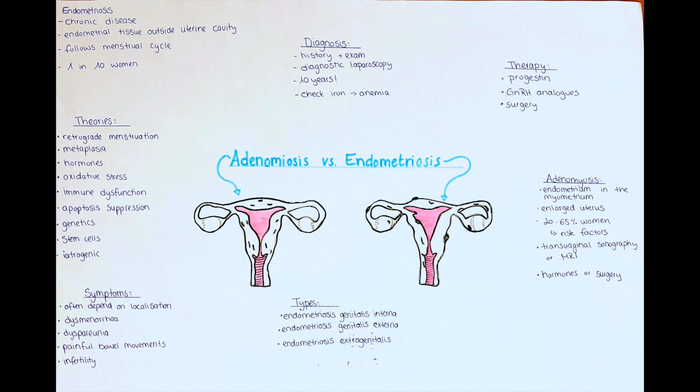The last type is endometriosis extragenitalis — so endometriosis outside of the genital tract — for example in the intestines, bladder, lungs, or muscles.